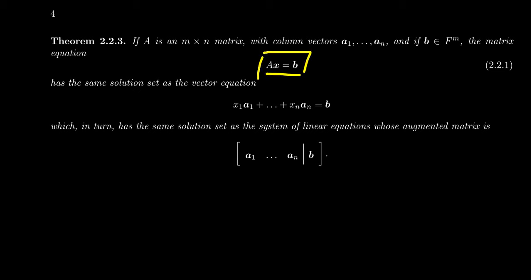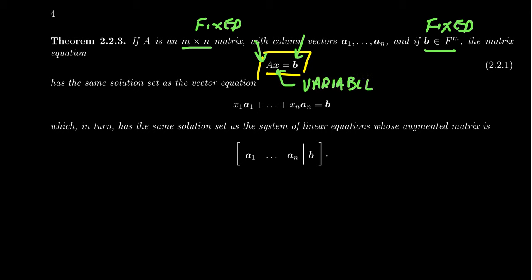As we're talking about this matrix equation, think of the following. The vector b will be a specific fixed vector in fm — this is given to you. Likewise, the matrix A, which is an m by n matrix, is also fixed and given to you. On the other hand, the vector x, which lives in fn, is meant to be a variable. This is what we're trying to solve for. So in section 2.2, the matrix equation we're concerned about is Ax equals b.